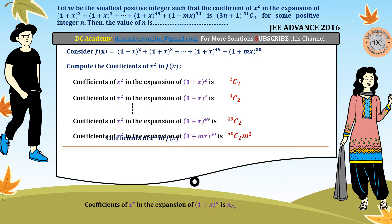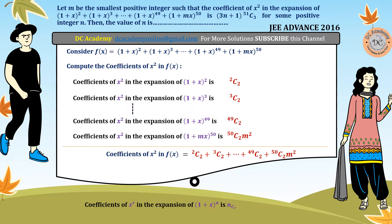Adding all of them together, the coefficient of x² equals the summation from ²C₂ to ⁵⁰C₂, plus the m² term. We need to find this summation.